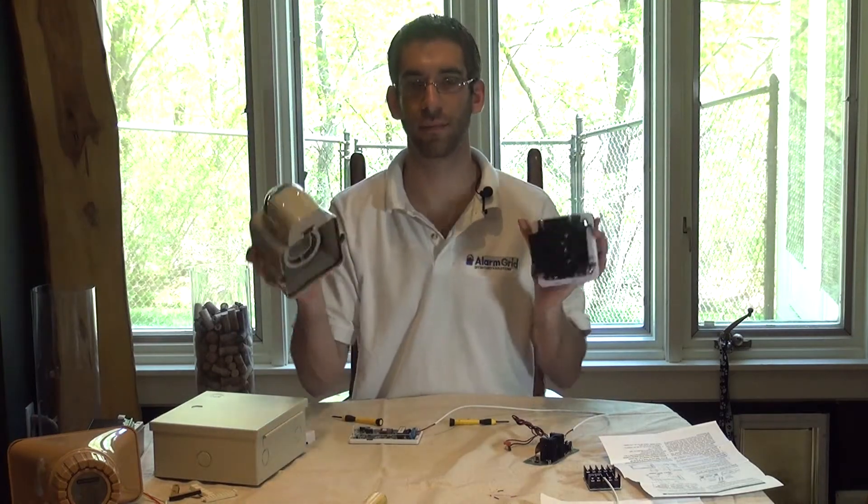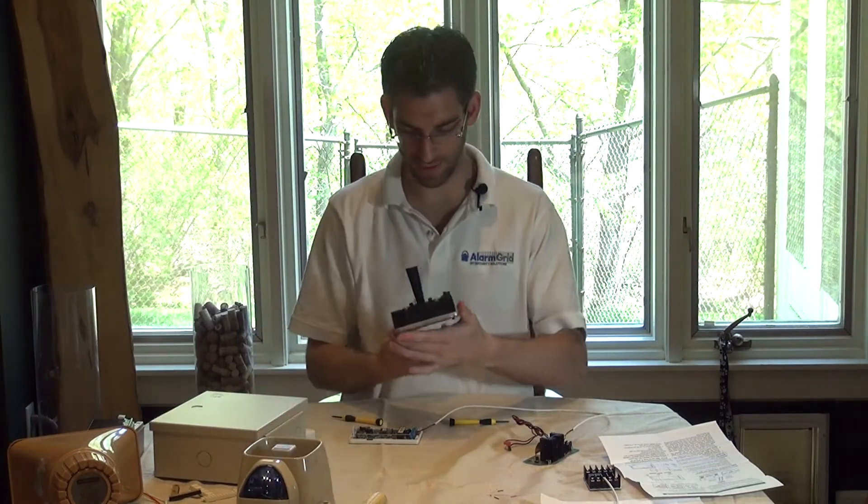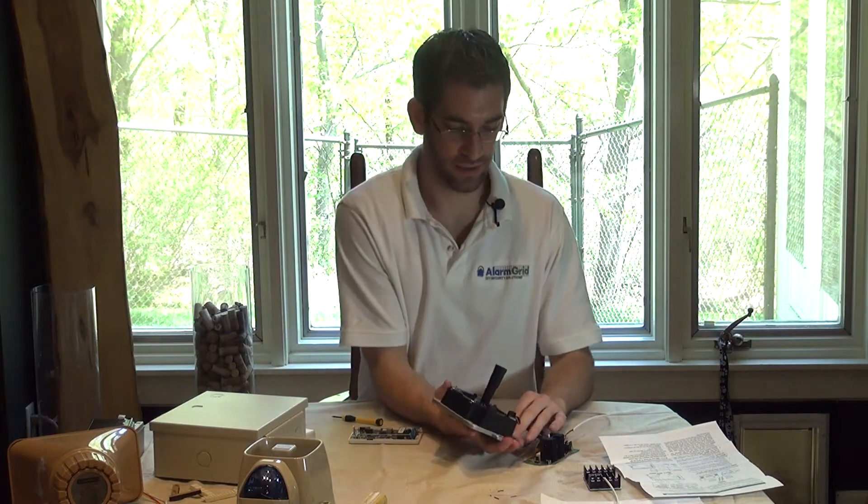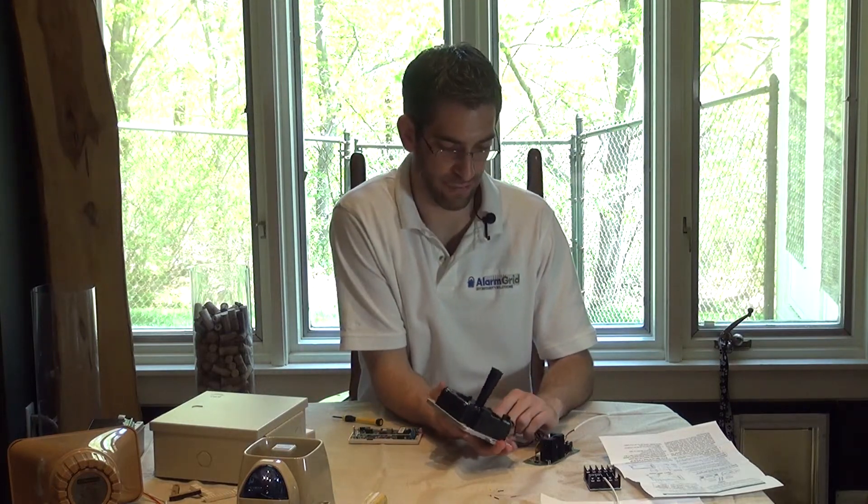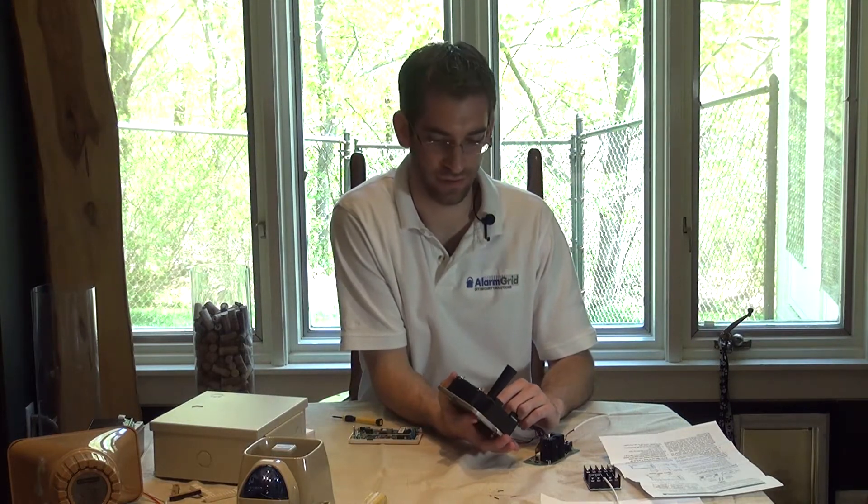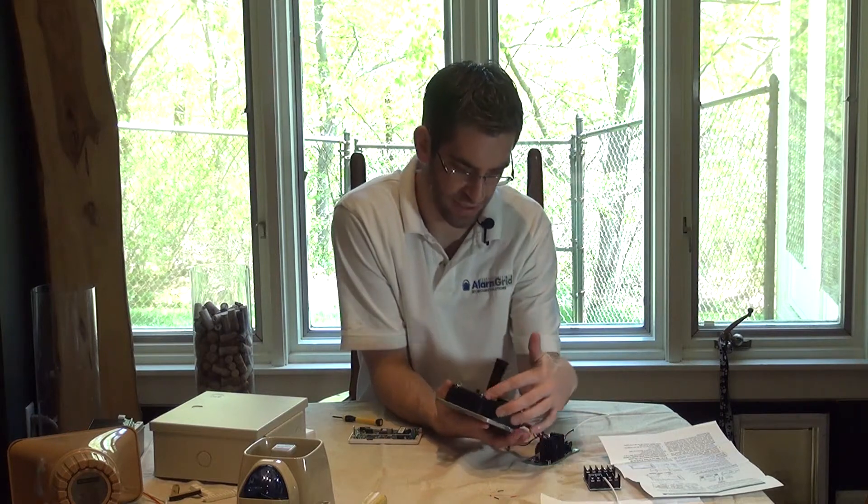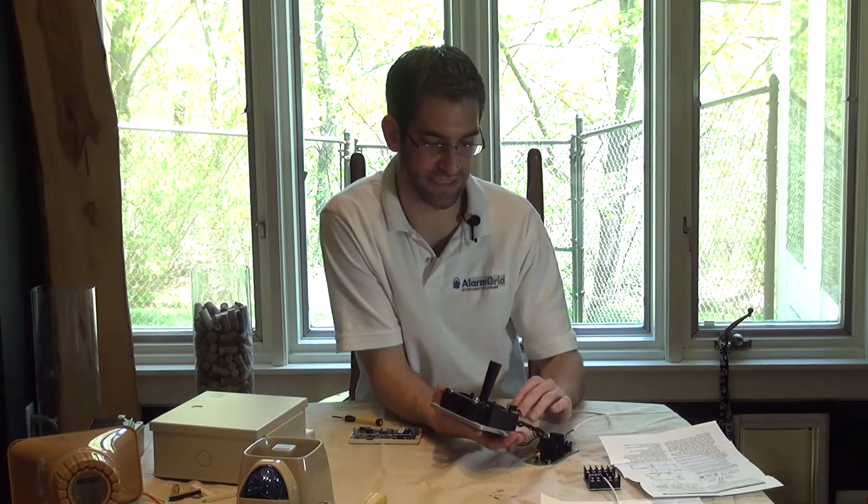We remove the cover from the back, and on here we have some terminals. We have a power negative and positive. We have a strobe negative and positive. We also have a tamper.